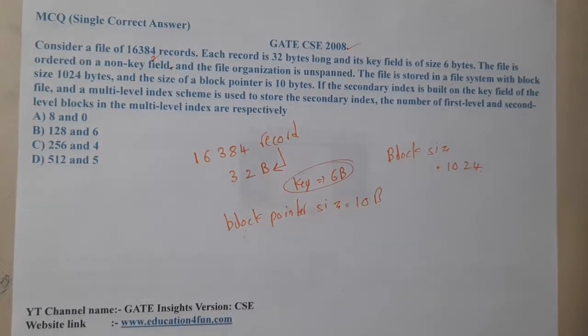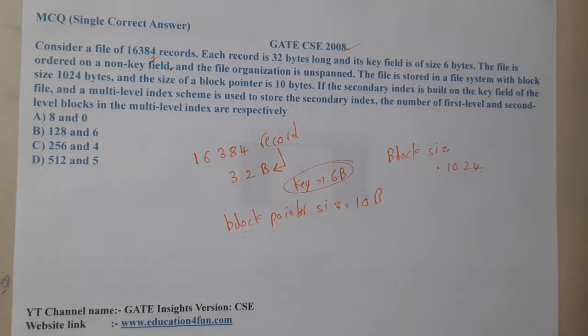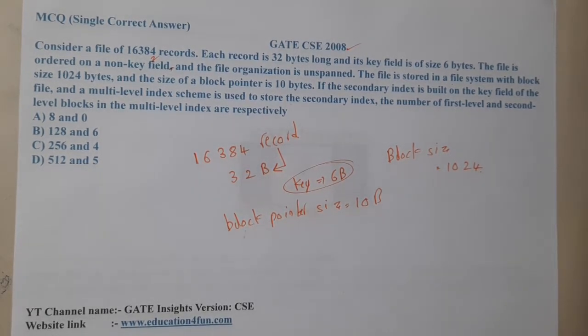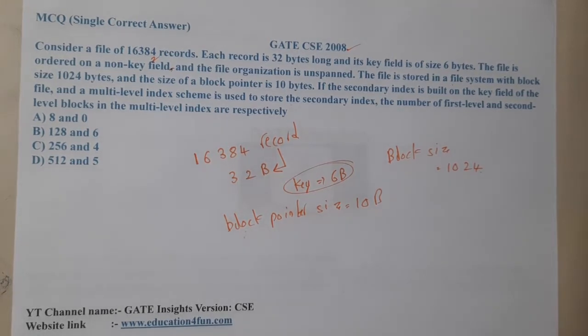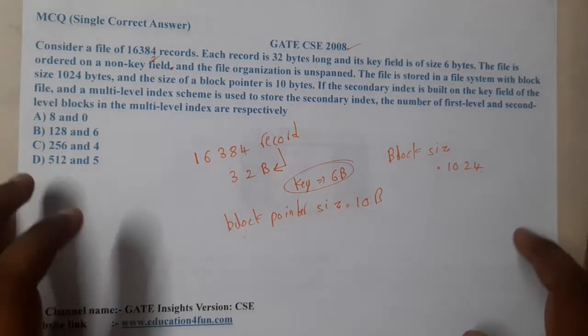If the secondary indexing is built on the key field of the file and a multi-level index scheme is used to store the secondary indexing, find the number of first level and second level blocks in multi-level indexing respectively. To be clear, they gave really less information in this question, right?